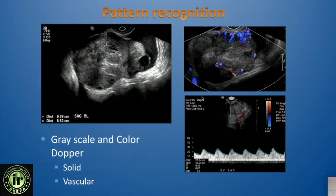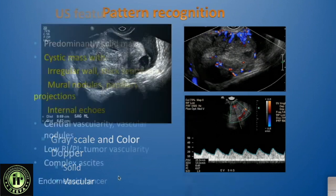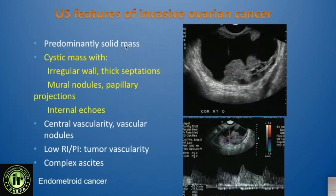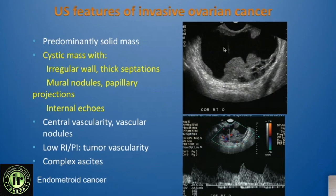Using a simple rule: lesions that are very likely to be malignant are those that are solid and have vascularity, especially disorganized vascularity. If they're cystic, features of concern include irregular walls, thick septations, mural nodules, papillary projections, or internal echoes. It is always important to look at the vascularity within any soft tissue component.